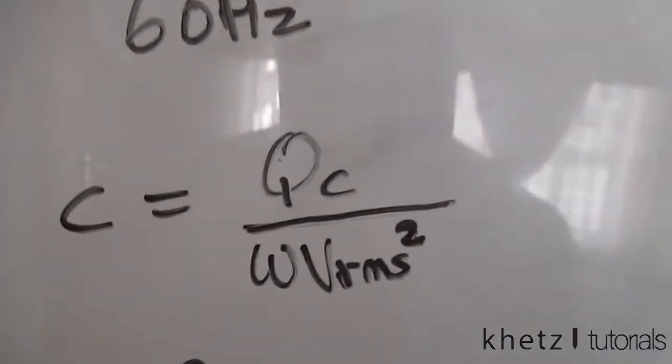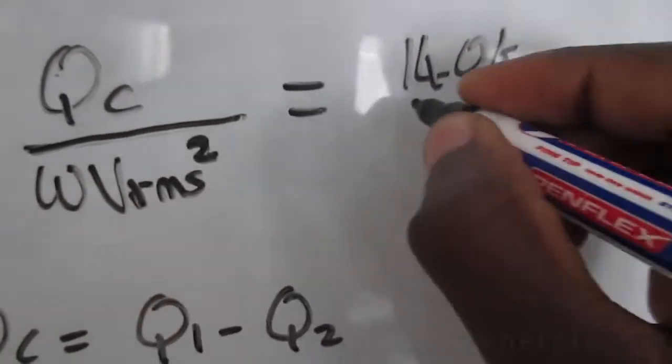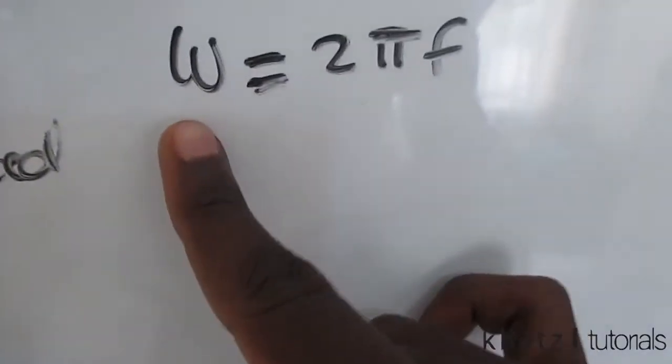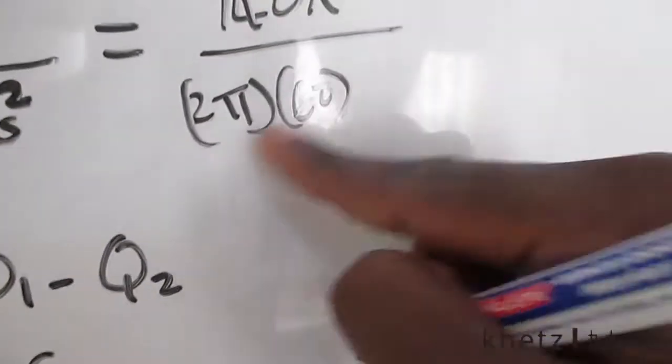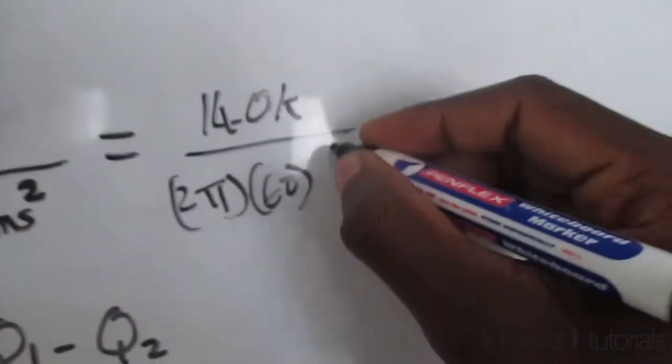Now come back to our formula and say we only have Q1 which is 140k. At the bottom we have 2 pi. Using this formula which says omega is equal to 2πf, we're given 60 degrees, so 2πf is 2π times 60. At the bottom we have the RMS which is already given to us.